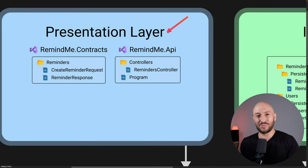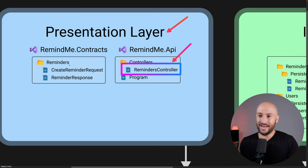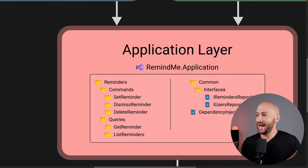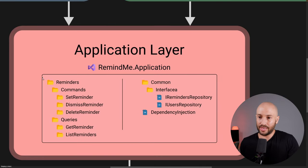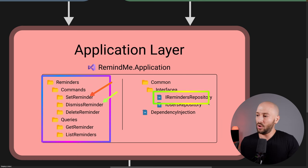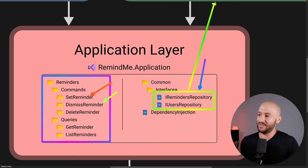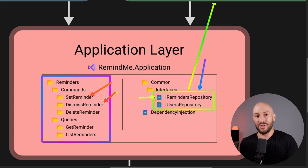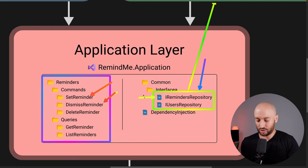Looking at what a solution may look like: the presentation layer is responsible for interaction with the outside world — that's why we have the controllers and the API definition there. The application layer has the various use cases: set reminder, dismiss reminder, and so on. The inner layers define the interfaces, and the outer layers have the actual implementation. So if a use case needs something from the database, it adds the corresponding method to the interface, but the actual implementation is abstracted away to the infrastructure layer.